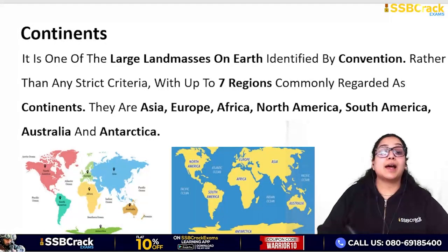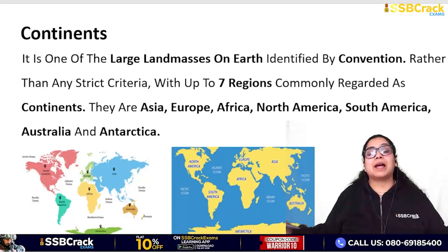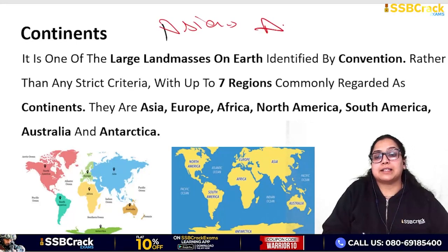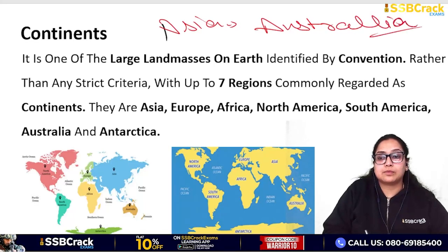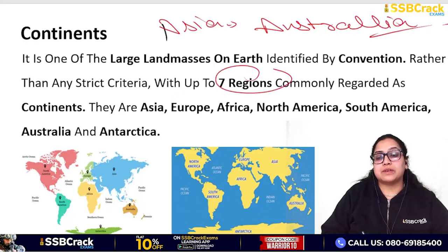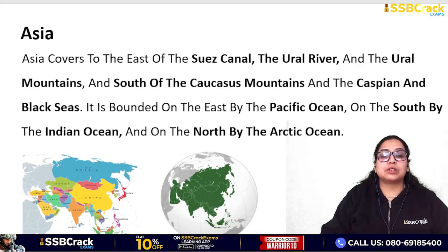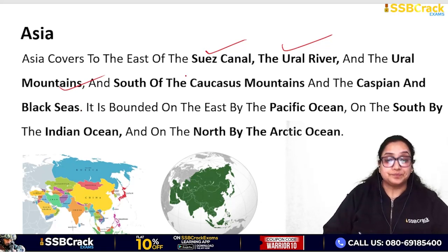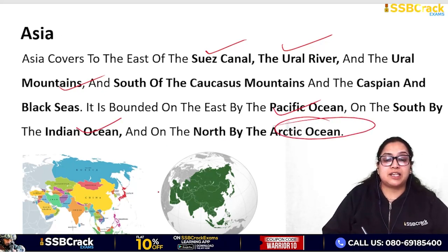Asia is the largest landmass among all continents, and the smallest continent we have already covered is Australia. Continents are commonly regarded as seven regions. Asia is bounded in the west by the Suez Canal, Ural River, Ural Mountains, Caucasus Mountains, Caspian Sea and Black Sea. It is bounded on the east by the Pacific Ocean, on the south by the Indian Ocean, and on the north by the Arctic Ocean.